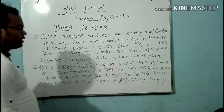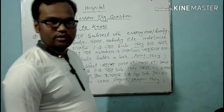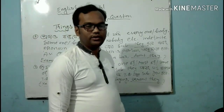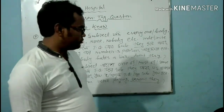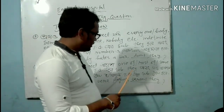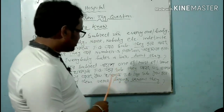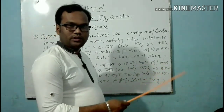Number two: when the subject is one of, some of, most of, none of, either of, each of, all of — these types of phrases are the subject of the sentence.